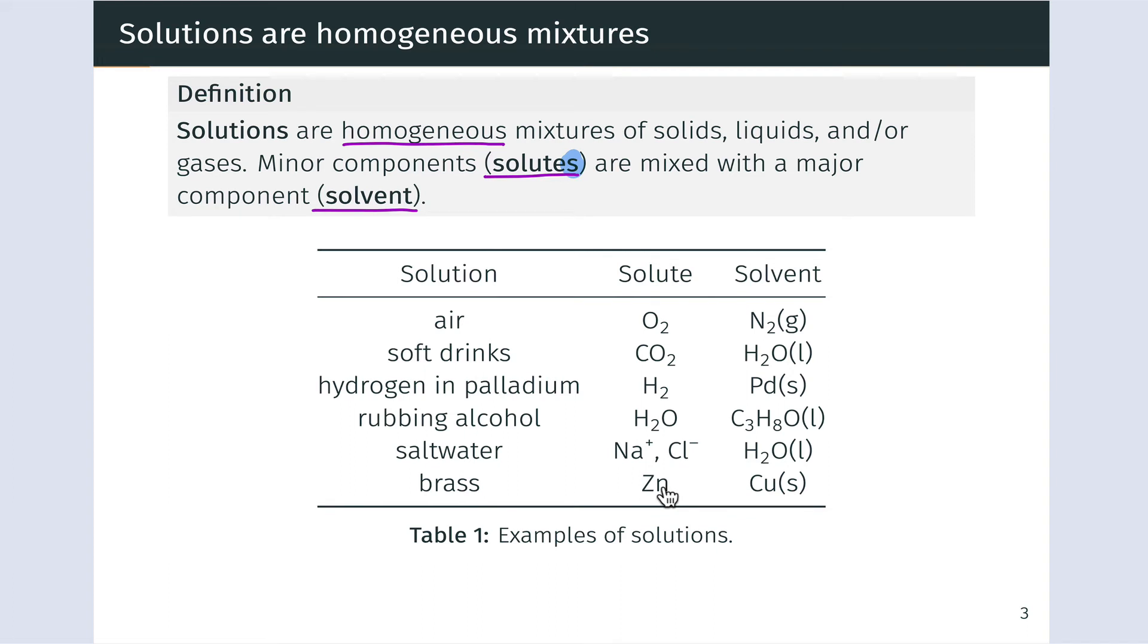And there are even solid and solid solutions, such as brass, where solid zinc is dissolved into solvent copper creating a solid alloy containing the two metals. So these solutions go to show you that the solute and solvent can have any phase.